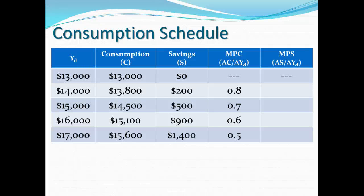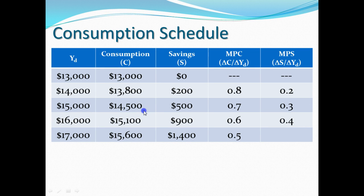Looking at MPS: if MPC is 0.8, then MPS has to be 0.2 — if you spend $0.80 of every new dollar earned, you save the remaining $0.20. So again, MPS is 1 minus MPC, and MPS continues to increase in this example. As long as our MPC is greater than zero, consumer spending will actually increase the size of GDP — by more than just the initial spending — because of what's called the multiplier.